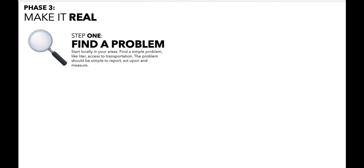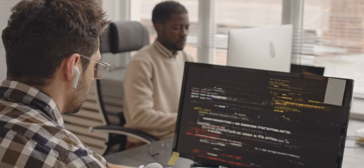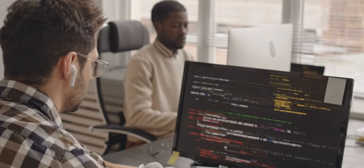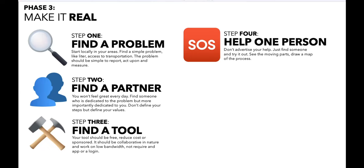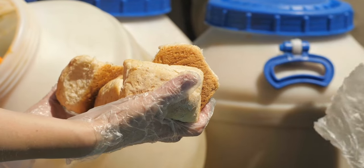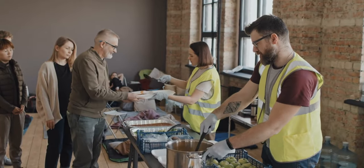Making it real is where the rubber hits the road — six steps. Step one: find a challenge in your area that you might be struggling with. Step two: find a partner — I built my first one alone with no objectivity. Step three: get your tools in order — at least a whiteboarding tool and a database or no-code tool. Step four — the most critical: help just one person. Build your solution, find one person, and see if it can get them from needing help to getting help. Step five: scale the process. Step six: share the results — show how these solutions are actually impacting people.